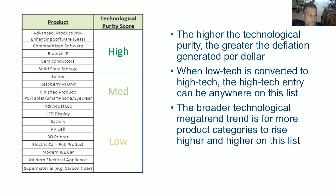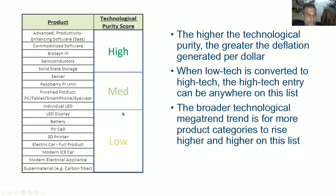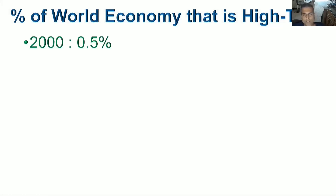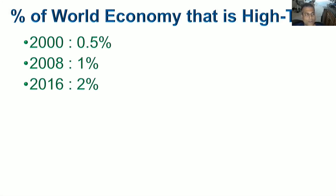How many dollars per year of advanced productivity-enhancing software are sold? How many semiconductors? How many finished PCs, tablets, and smartphones? How many individual LED bulbs? How many batteries of every type? When you combine technological purity and dollar revenue and see what percentage of total GDP that represents, that leads to the estimation. That's how we got to 0.5% in 2000, 1% in 2008, 2% in 2016, and 3% today.